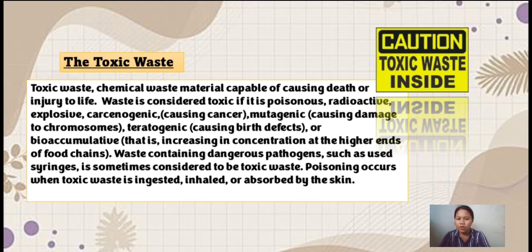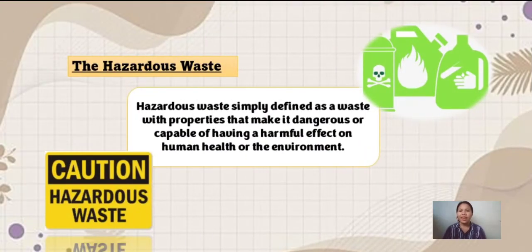Poisoning occurs when toxic waste is ingested, inhaled, or absorbed by the skin. On the other hand, hazardous waste is simply defined as a waste with properties that makes it dangerous or capable of having a harmful effect on human health or on the environment.